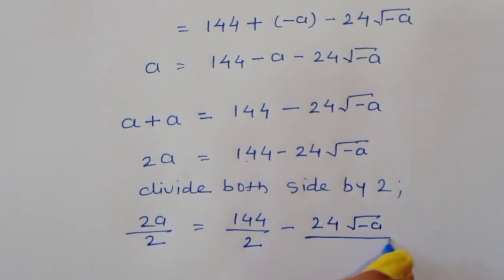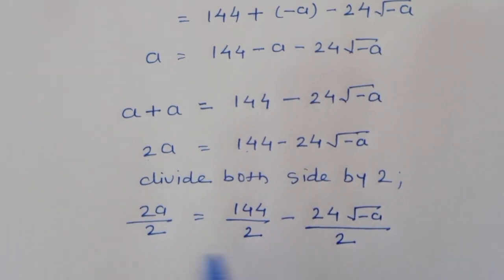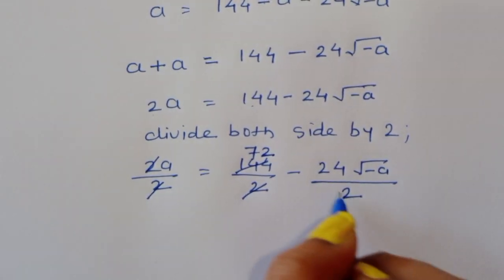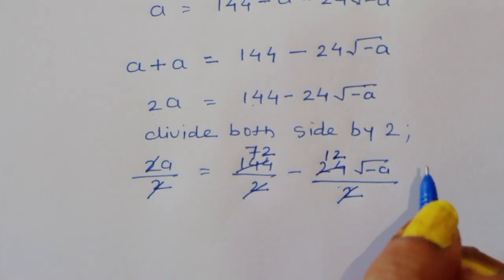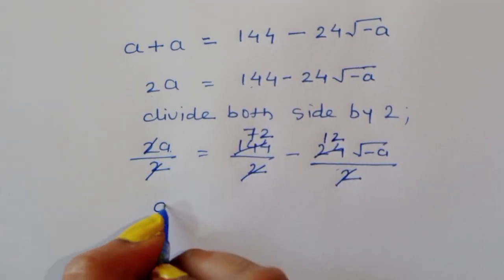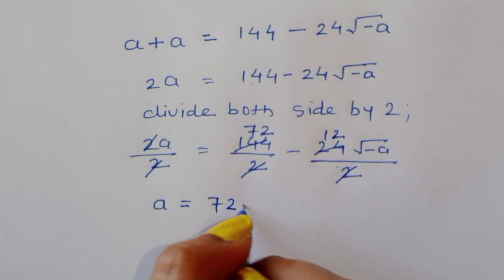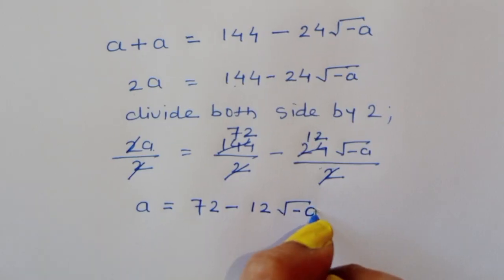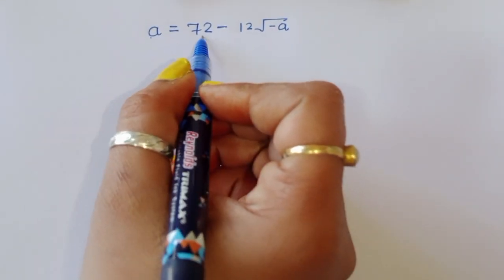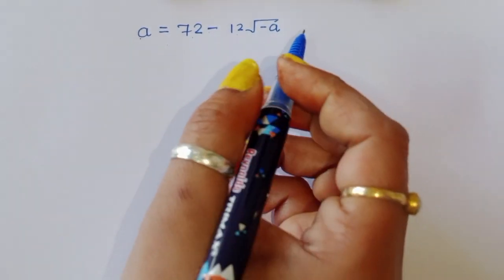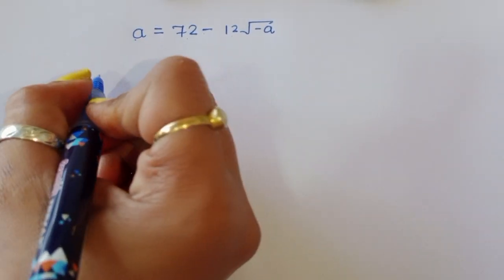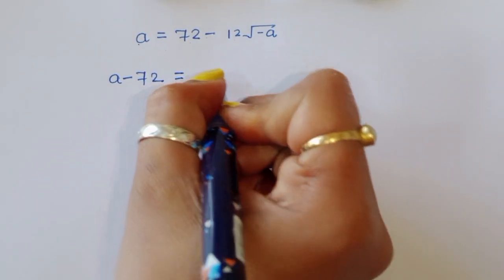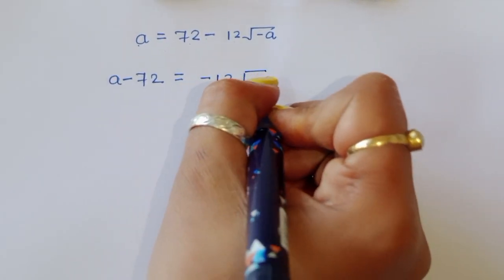Dividing both sides by 2: 2a ÷ 2 = 144 ÷ 2 − 24√(−a) ÷ 2. So a = 72 − 12√(−a). Rearranging: a − 72 = −12√(−a).